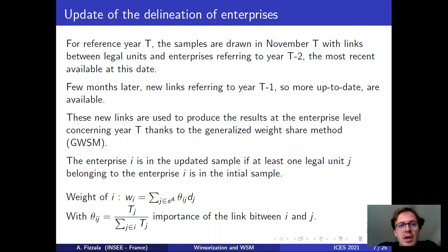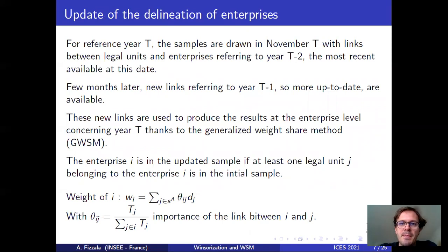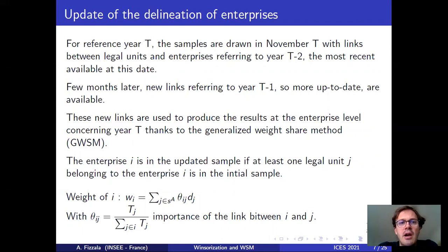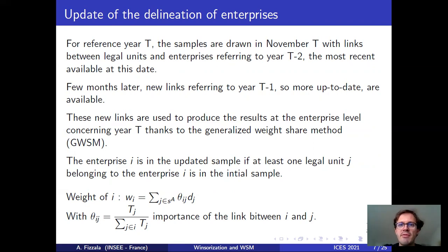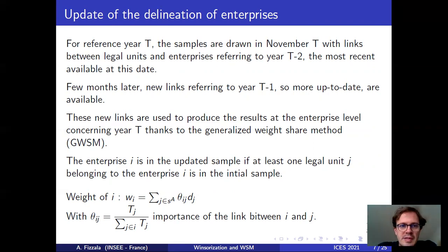We have to use the weight share method because of the delineation of enterprises. Basically, an enterprise is a set of legal units. At the moment of drawing the sample — in November T for reference year T — we only have links between legal units and enterprises referring to year T minus two. A few months later, we have new links referring to year T minus one, and we want to use those links.